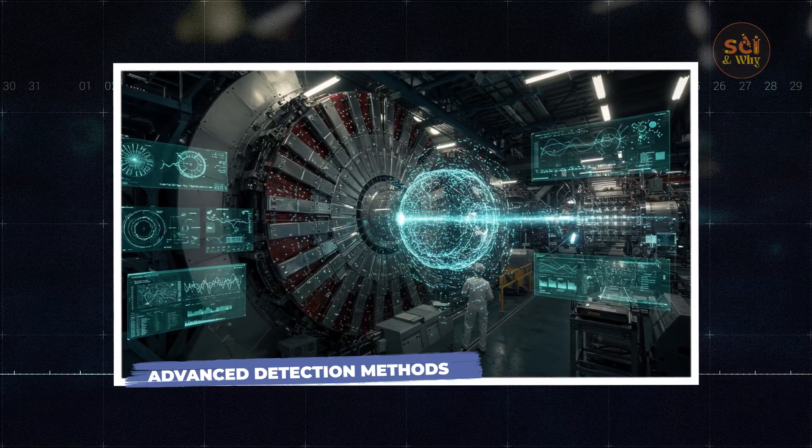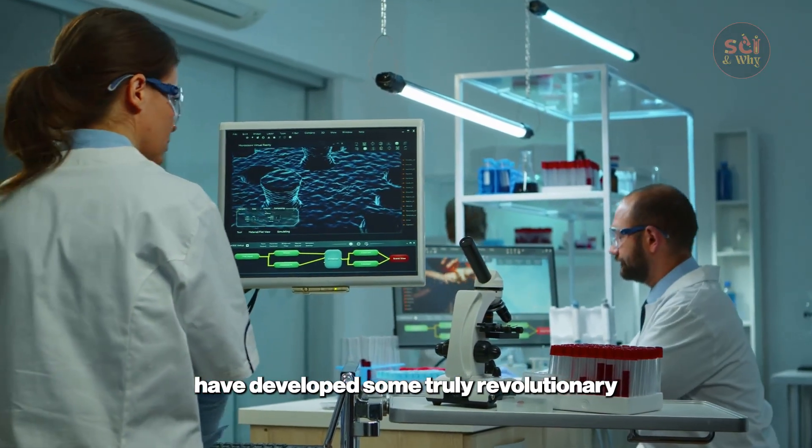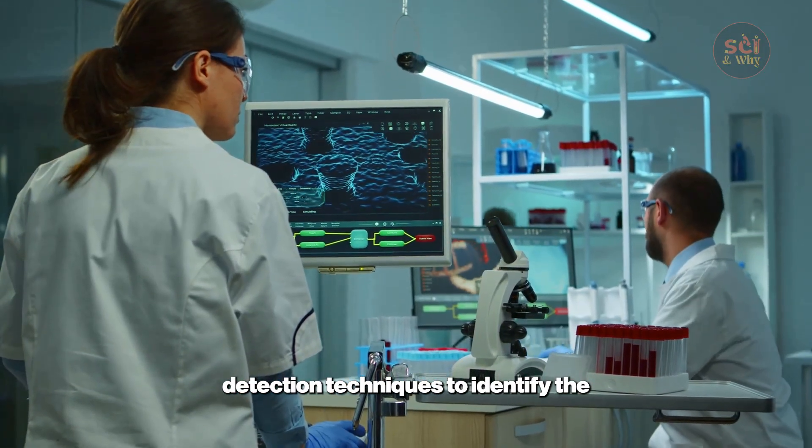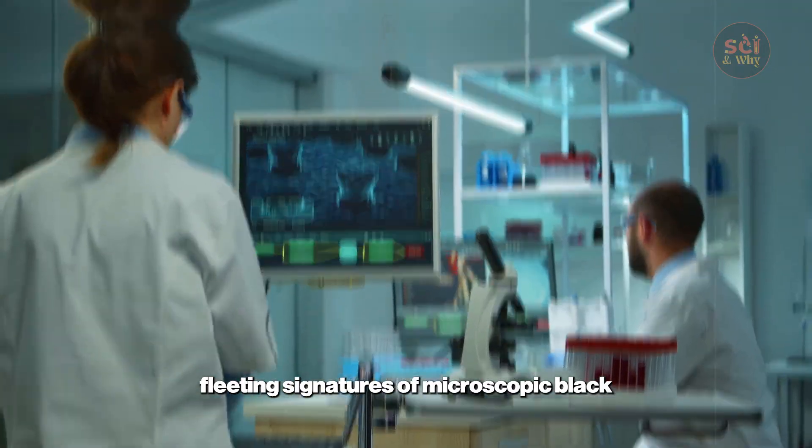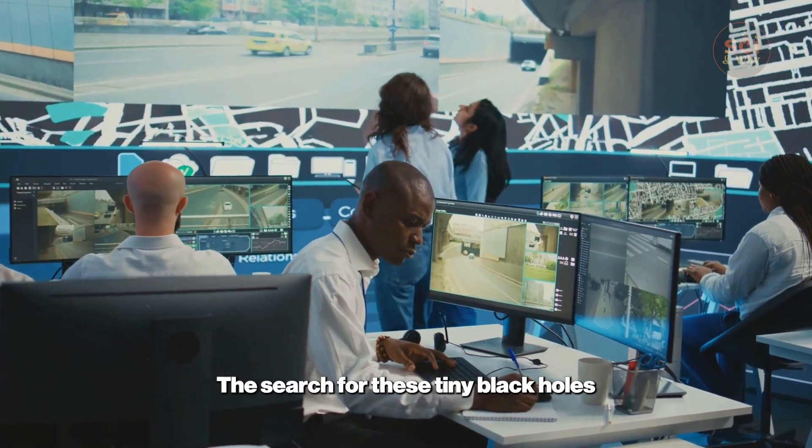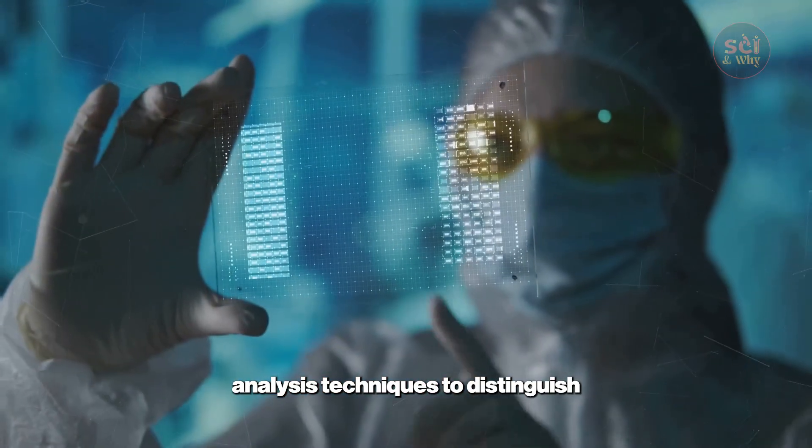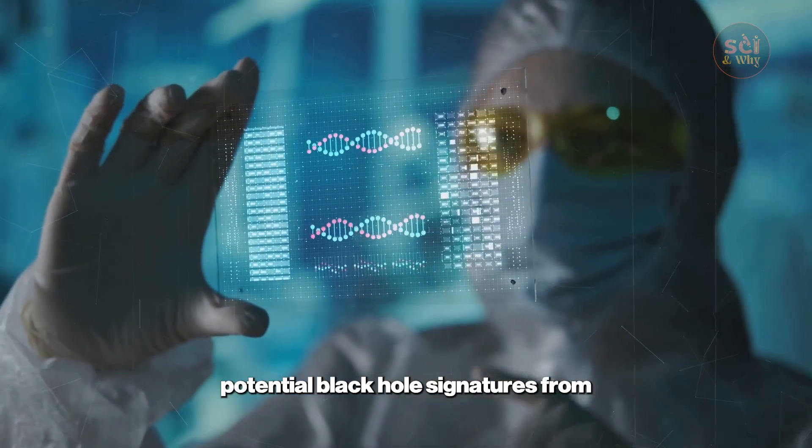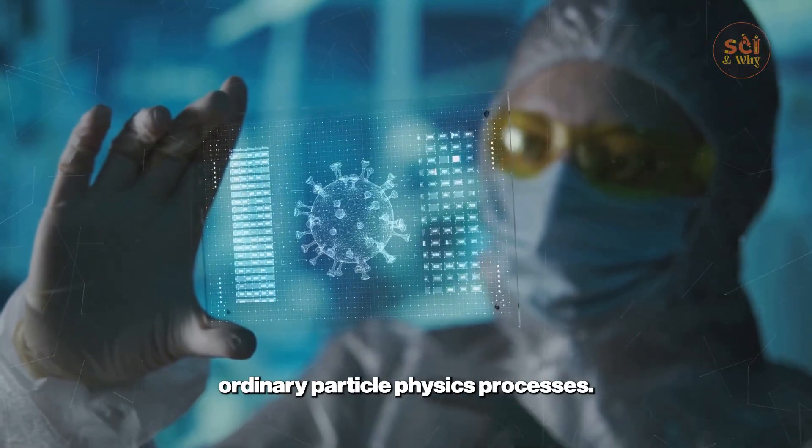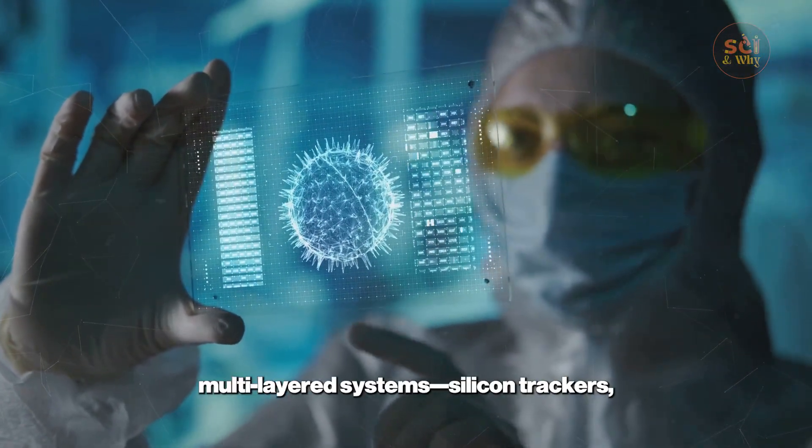Advanced Detection Methods. CERN's scientists have developed revolutionary detection techniques to identify the fleeting signatures of microscopic black holes among millions of particle collisions. The search for these tiny black holes required developing sophisticated analysis techniques to distinguish potential black hole signatures from ordinary particle physics processes. The CMS and ATLAS detectors use multi-layered systems: silicon trackers, electromagnetic calorimeters, and muon chambers.